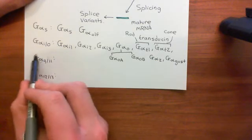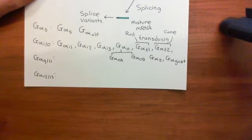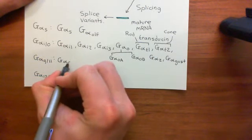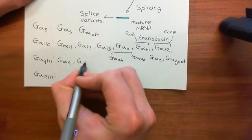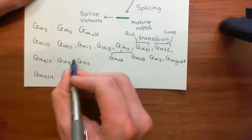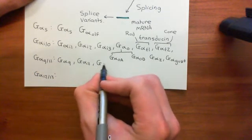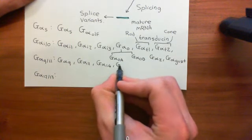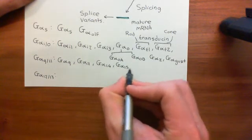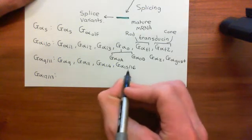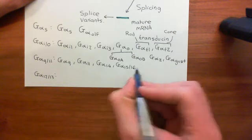Moving on to the Gα-Q/11 family, which is the one we're really interested in. The first member is Gα-Q, the one that everyone has heard of. Then there is Gα-11, then Gα-14, and finally Gα-15/16. That last one is just one alpha subunit — do not be confused into thinking that Gα-15/16 refers to two separate alpha subunits.